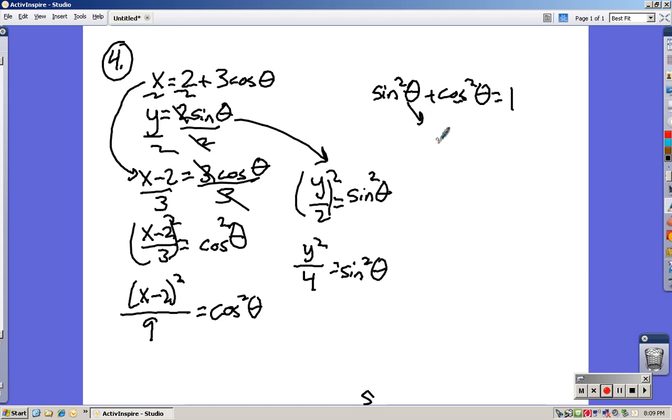So I'll substitute that y squared over four into the sine squared place. I know what cosine squared is. It's this. So I'll substitute that x minus two quantity squared over nine into that spot. It equals one. And I have this nice equation for an ellipse.